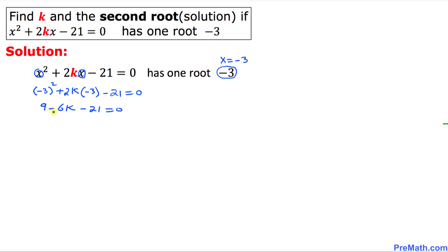And here if we simplify this thing, 9 and negative 21 is going to give us negative 12 equal to 0. If I move this negative 12 on the other side that is going to give us negative 6k equal to positive 12. Divide both sides by negative 6, so that means this negative 6 and negative 6 cancels out. K turns out to be negative 2.